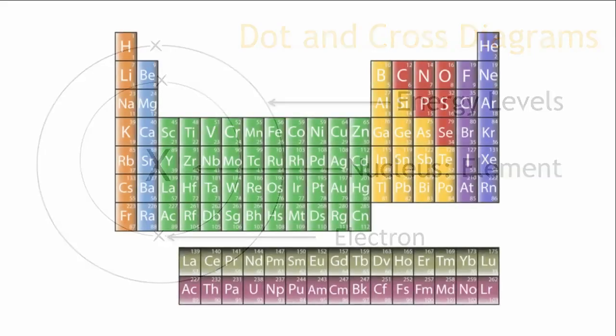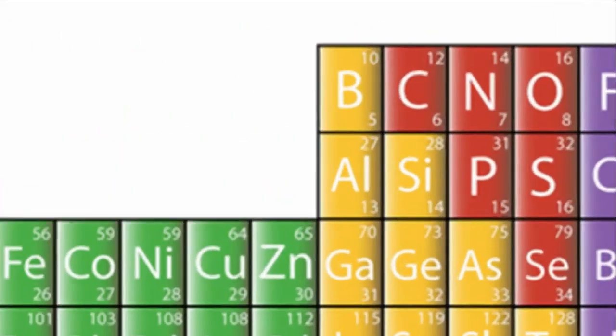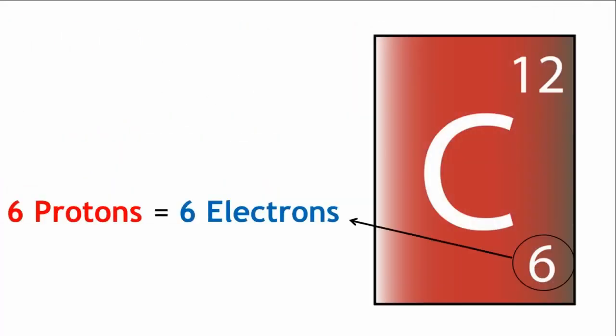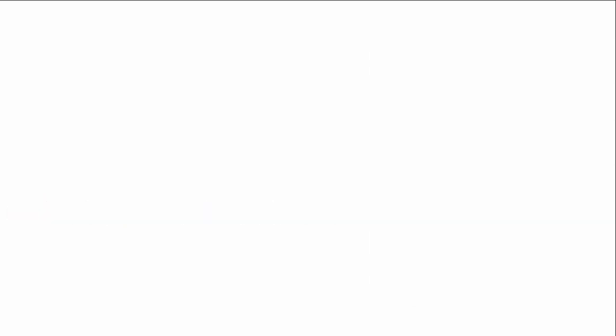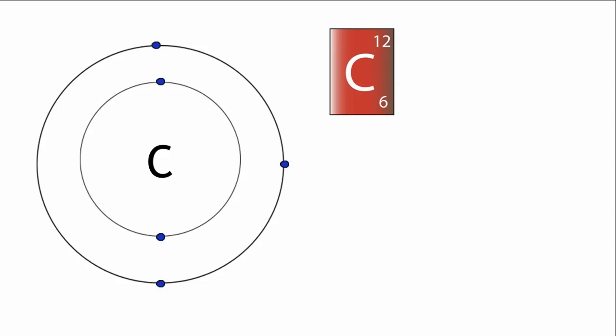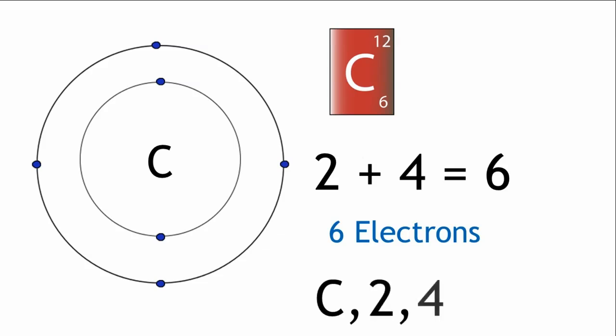Let's look at some more examples. Carbon has six protons, therefore it has six electrons. The first two electrons are placed in the first shell, and the next four are placed in the second shell. Two plus four, six electrons. This would be written as C 2,4.